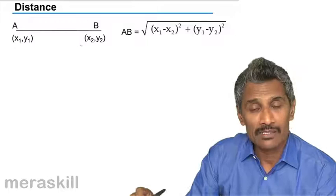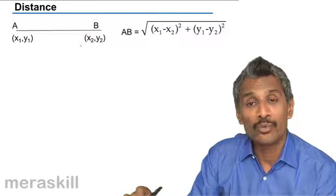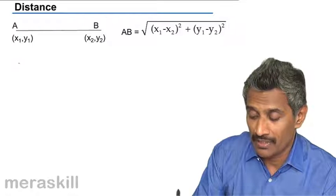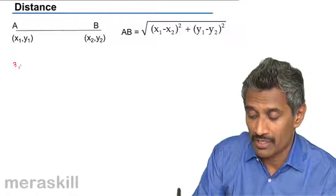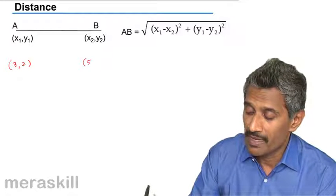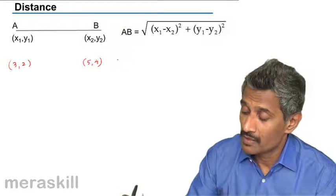Find the corresponding difference in x coordinates, square it, add the two and then find the square root. For example, I have a point A whose coordinates are 3 comma 2 and B whose coordinates are 5 comma 4.